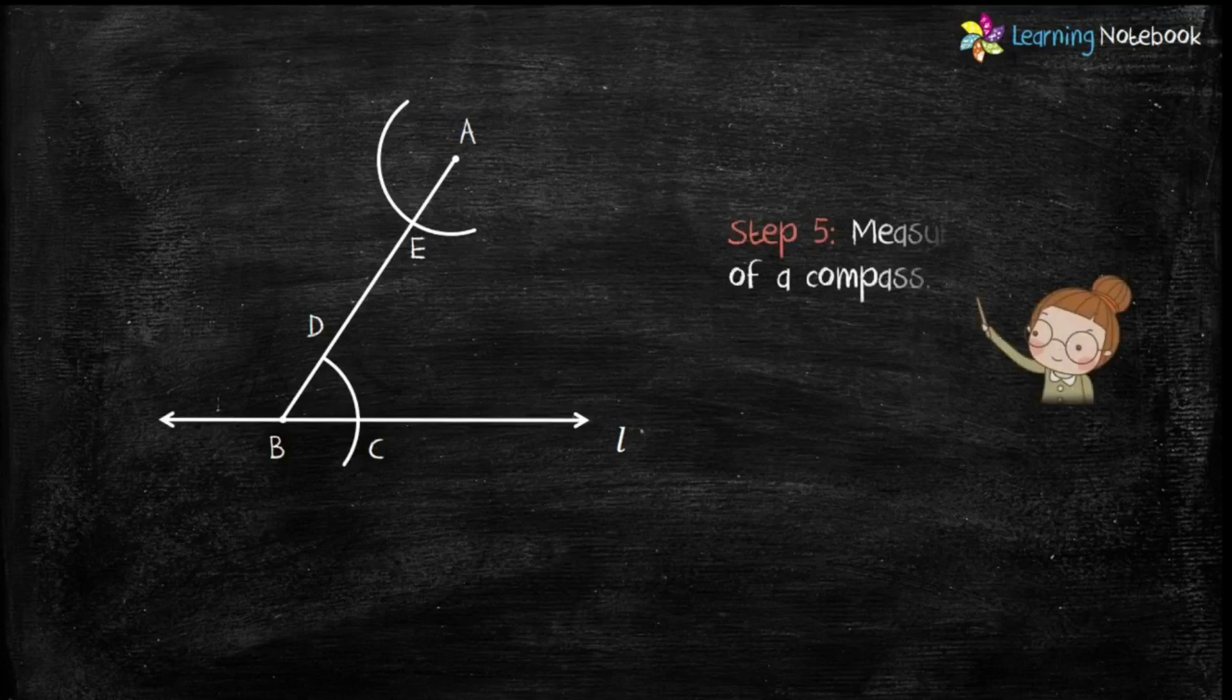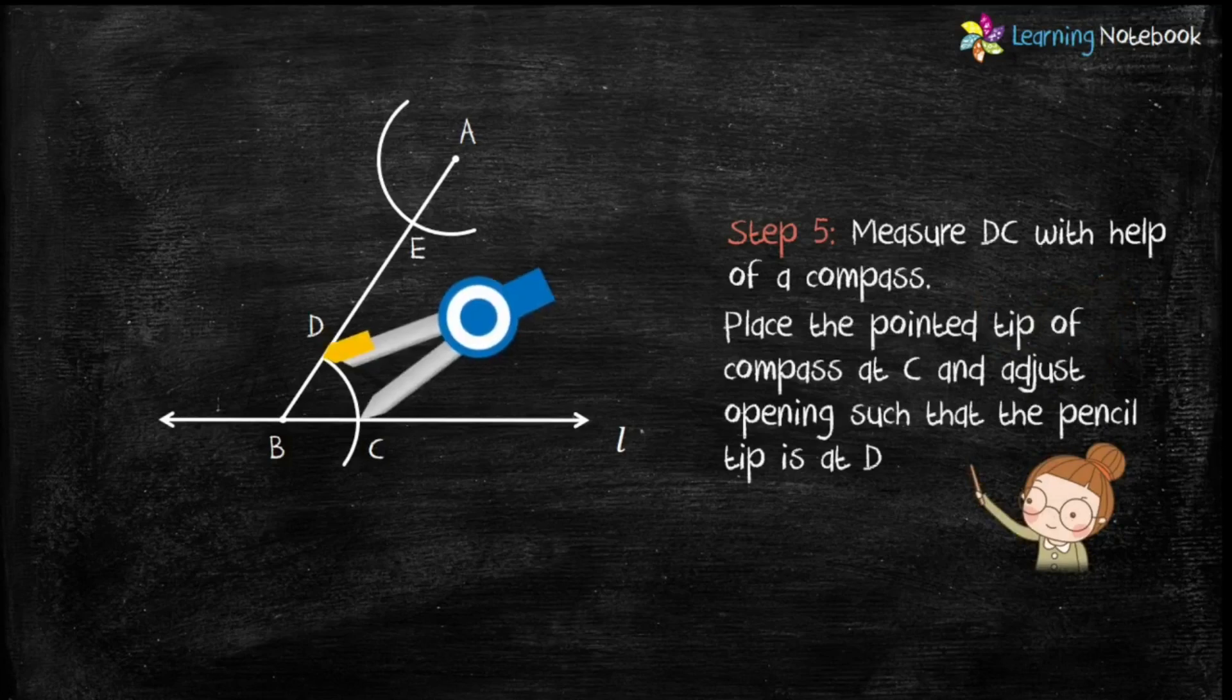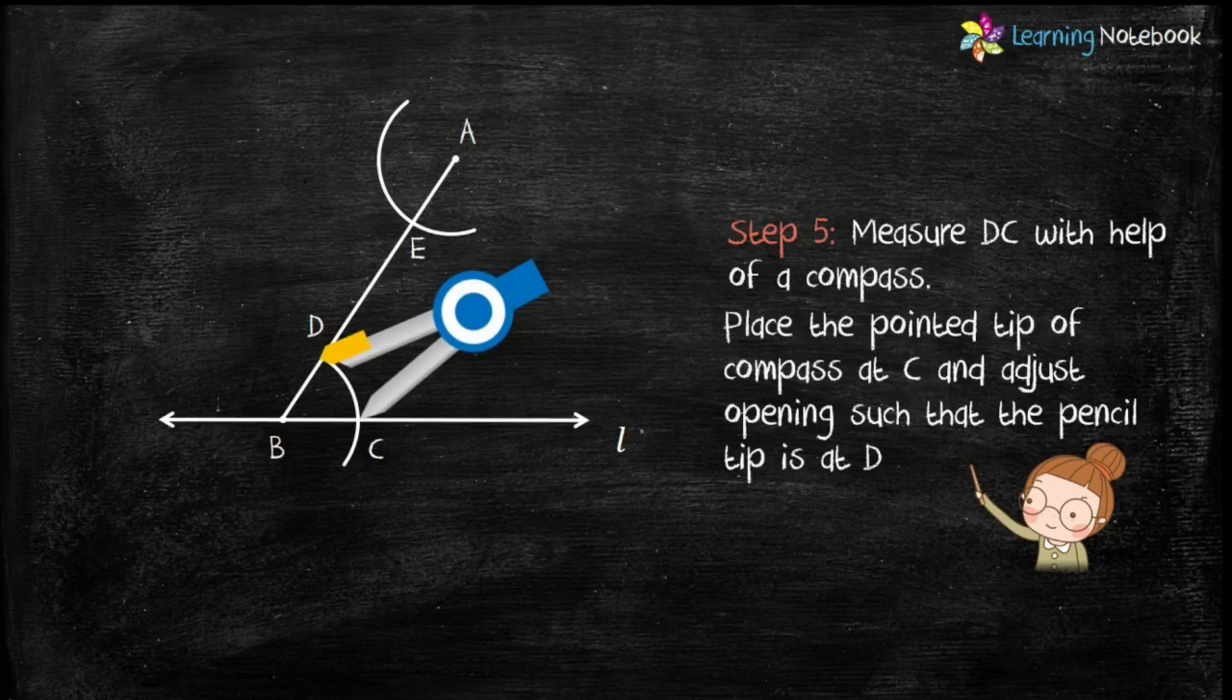Now, in step 5, measure DC with the help of a compass. Students, to measure DC, place the pointed tip of the compass at point C and then adjust the opening of the compass such that the pencil tip is at point D.